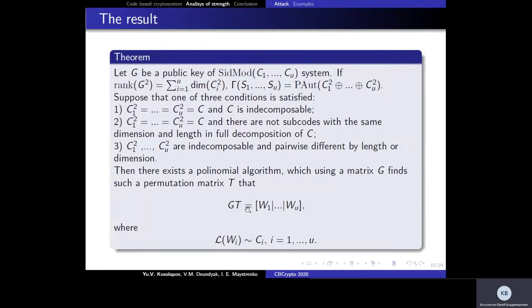Here we present our result in compact form. If the rank of the square of the public key equals this sum, and if gamma equals the permutation automorphism group, and if one additional condition is satisfied, then we can quickly find a permutation matrix T that can transform our public key to a concatenation of U matrices, where each matrix generates a code permutationally equivalent to code Ci.